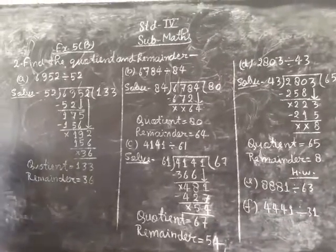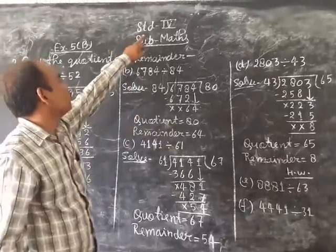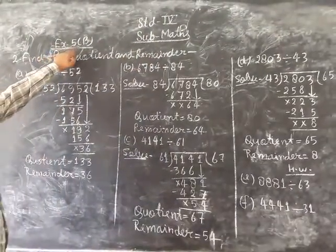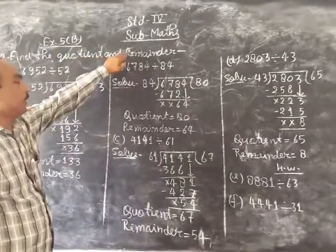Good morning children, welcome to online classes in SDPS standard fourth subject maths. Today I will teach exercise 5B, question number 2, find the quotient and remainder.